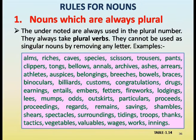Rules for nouns — always plural nouns. The following are always used in the plural number. They always take plural verbs and cannot be used as singular nouns. Examples: arms, riches, calves, caves, scissors, trousers, pants, clippers, tongs, billows, annals, archives, ashes, arrears, athletics, auspices, belongings, breeches, bowels, braces, binoculars, billiards, customs, congratulations, drugs, earnings, entails, embers, fetters.